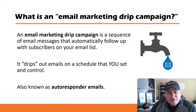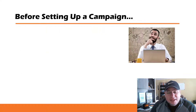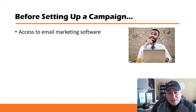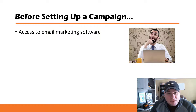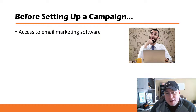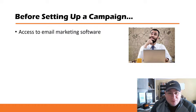This is also known as auto-responder emails because they automatically go out on a schedule that you set up and control. Before we go in and set up a campaign, there are a couple of things you need. One is access to an email marketing platform or software. In this video I'm going to be demonstrating with Aweber, but you can set up the same thing in other email marketing software as well. Aweber is what I personally use in my business and what I personally recommend.